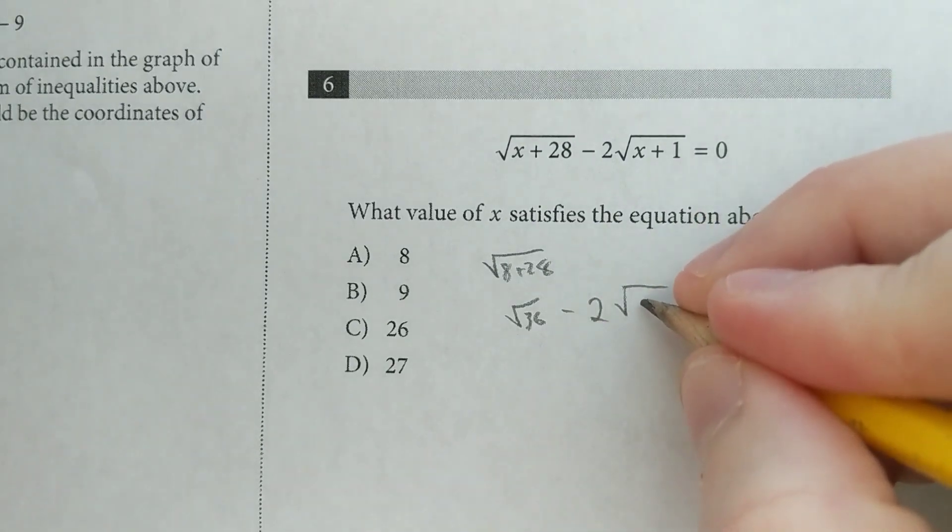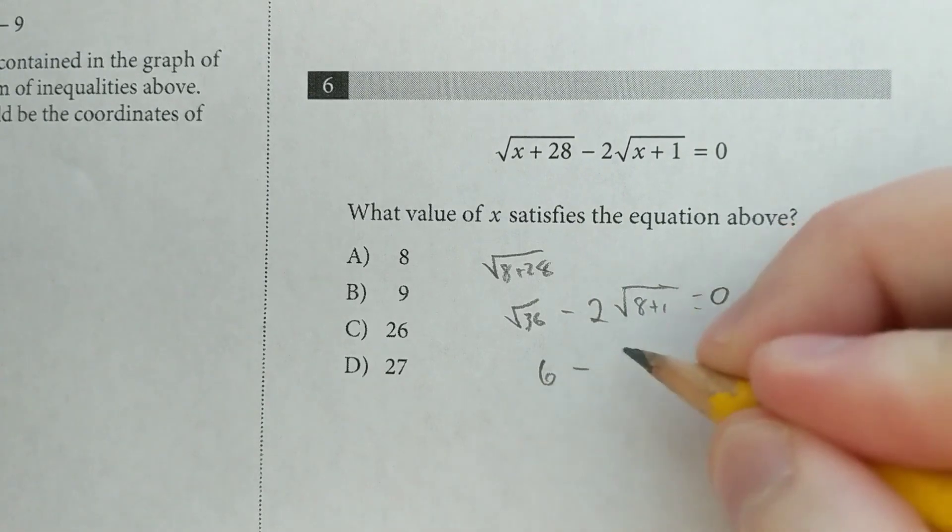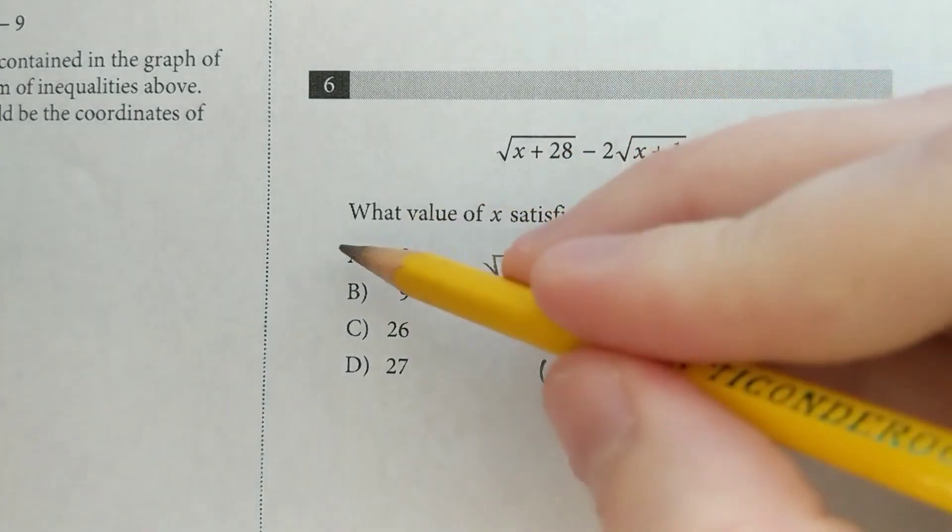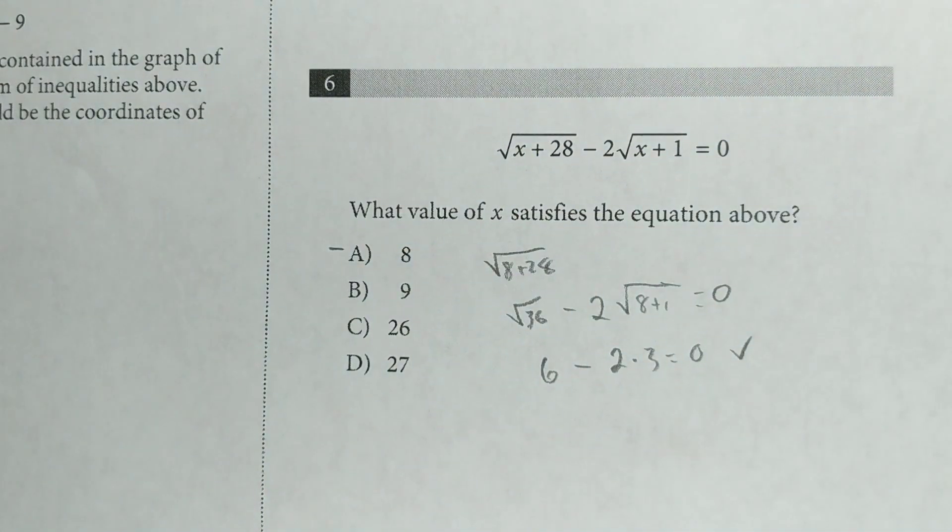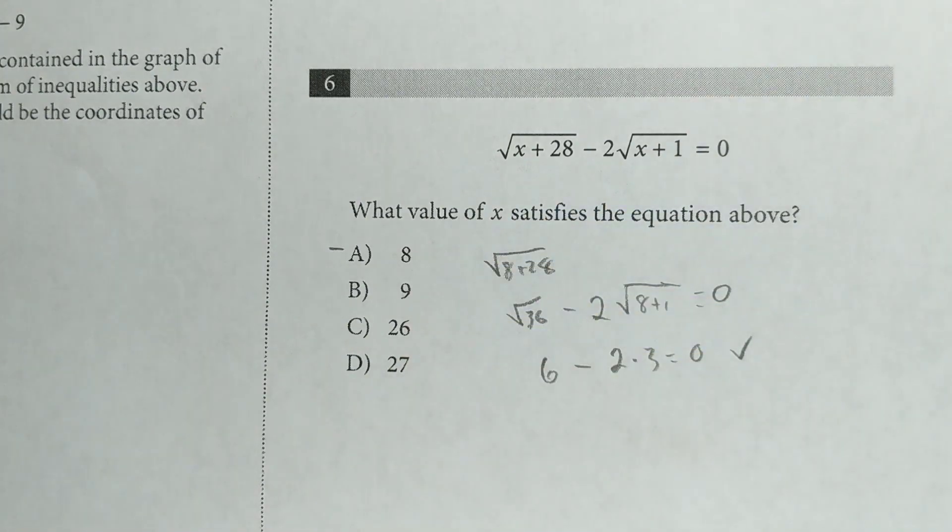And we have 2 times the square root of 8 plus 1. That also comes out to a perfect square. So we have 6 minus 2 times 3 equals 0. That's true. And if you're in the middle of the test, you would just accept it and move on. Later, you might want to come back and check the other answers to make sure that they don't work.